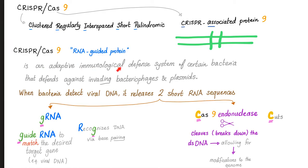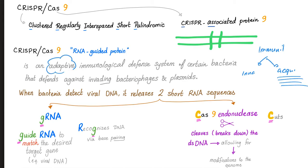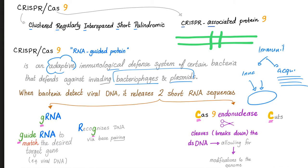It's an adaptive immunological defense system of certain bacteria that defends against invading bacteriophages and plasmids. Remember your immunity — it had two types: innate immunity and acquired or adaptive immunity. The poor bacteria has to defend itself against invaders, against the bacteriophages and plasmids. So how can we copy the genius of the bacteria and instead of attacking the invaders, attack the bad gene and replace it with a good gene? Let's learn from the bacteria.